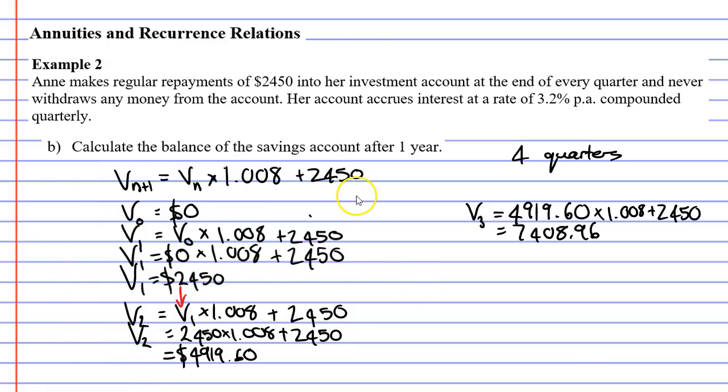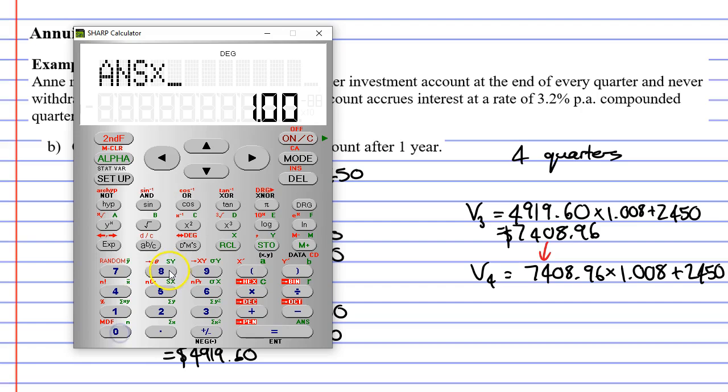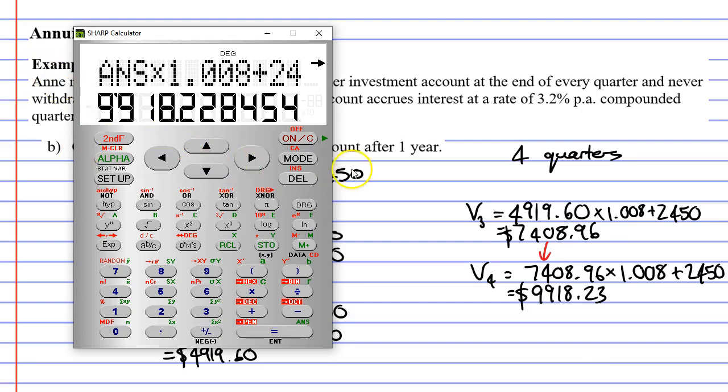Let's now move on to our fourth and final quarter. So V4 will equal, and we need to take the previous result of $7,408.96. We multiply this by 1.008 and add $2,450. Times 1.008 plus $2,450 and we come up with $9,918.23. So after four quarters or one year, our account is accumulated to $9,918.23 in savings.